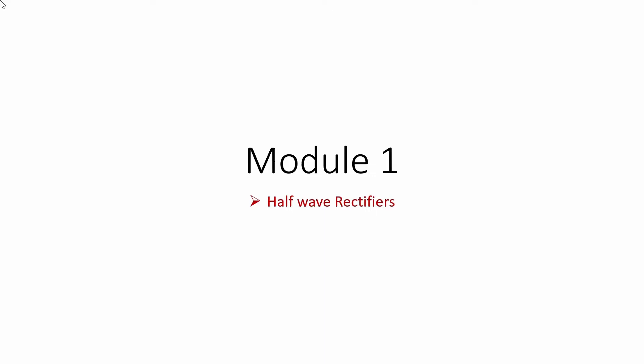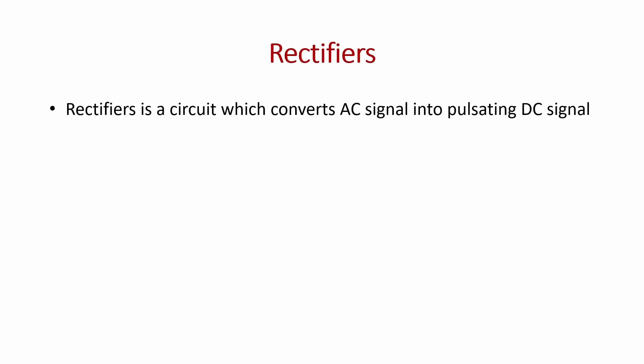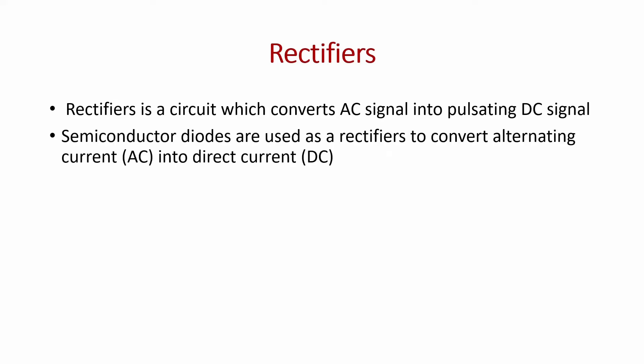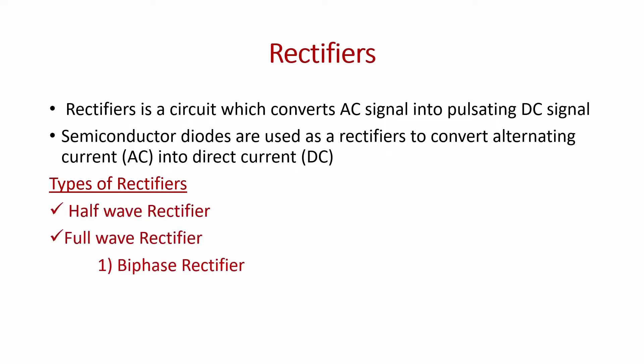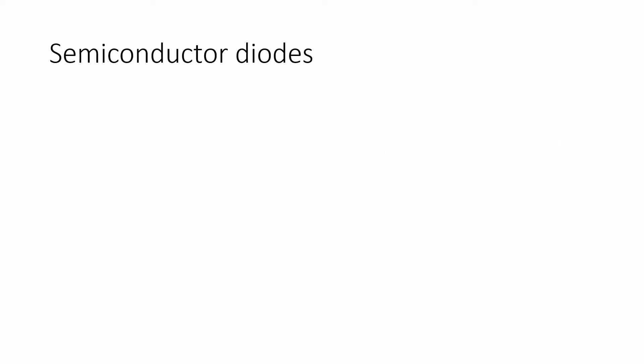Now we will look at half-way rectifiers. A rectifier is a circuit which converts an AC signal into a pulsating DC signal. For rectification, semiconductor diodes — specifically PN junction diodes — are used to convert alternating current into direct current. The types of rectifiers are: half-way rectifier, full-way rectifier, and full-way rectifiers are further classified into bi-phase rectifier and bridge rectifier.